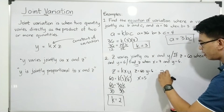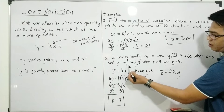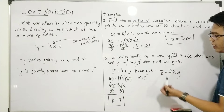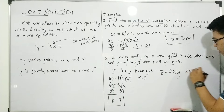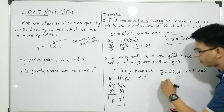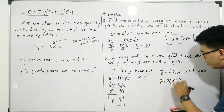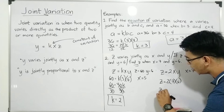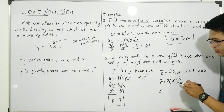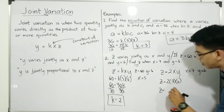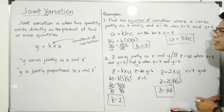The equation becomes z is equal to 2 times x times y. Now we can solve for z. Find z when x is equal to 7 and y is equal to 6. We replace x and y: z is equal to 2 times 7 times 6. Simplifying: 2 times 7 is 14, times 6 gives us z is equal to 84. The answer is 84. This is the value of z for problem number 2.